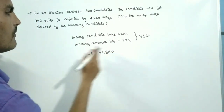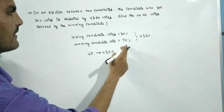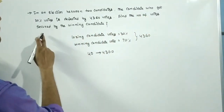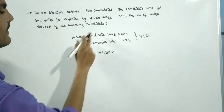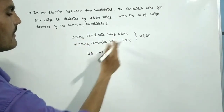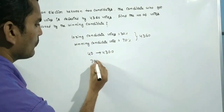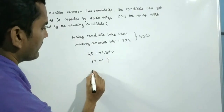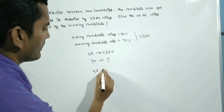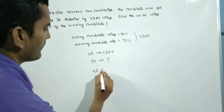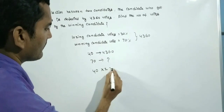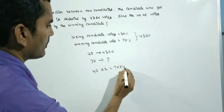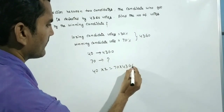What is 70%? The question asks for the number of votes secured by the winning candidate. To find 70%, go for cross multiplication: 40 into X equals 70 into 4360.